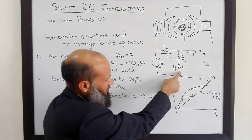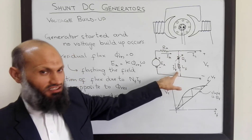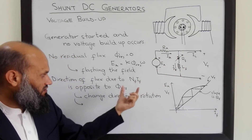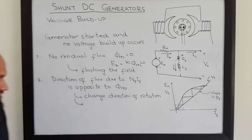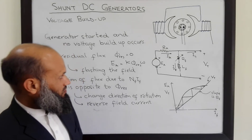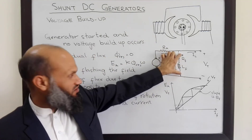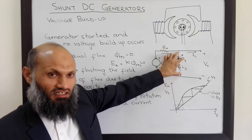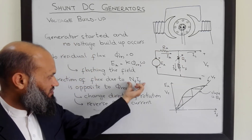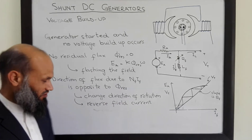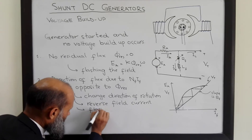The solutions to the opposing flux problem are: first, change the direction of rotation of the rotor — this reverses the direction of generated voltage and therefore the direction of current in the field winding, making both residual flux and MMF flux align in the same direction. Second, reverse the connections of the field windings, which reverses the direction of current. Third, flash the field using an external voltage source to create residual flux in the correct direction.